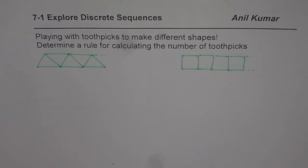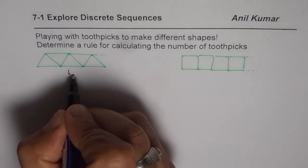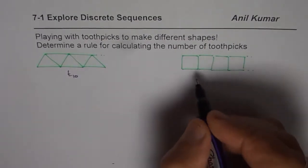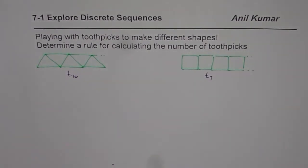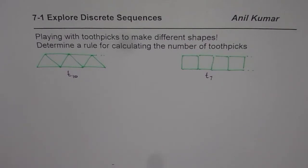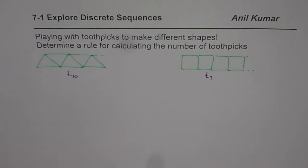Now the question is: if I have this kind of pattern, how do I find the number of toothpicks for ten triangles? Or how to find the number of toothpicks for, let us say, the seventh square? That is the question we need to answer, and this is what we are going to explore in unit seven on sequences — finding a general term and then a specific term using rules or formulas.